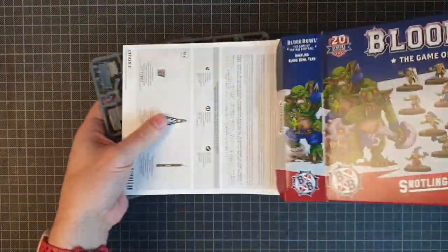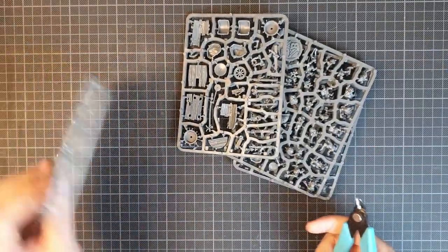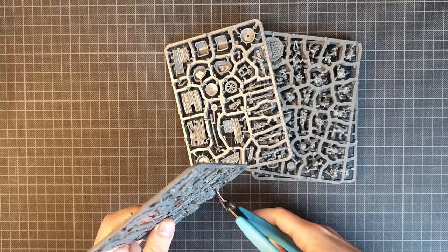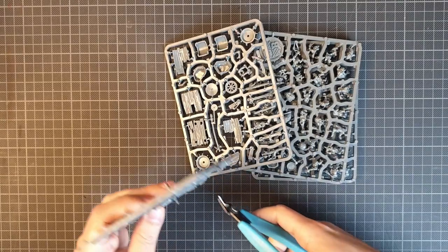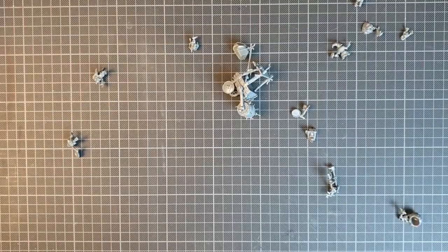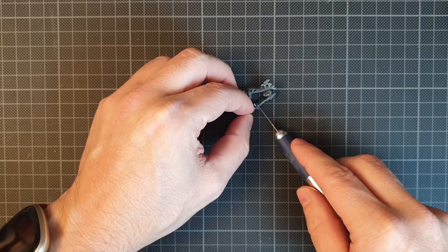The minis I'll be using in this diorama are the Snodling Blood Bowl team. Snodlings are the smaller cousins of orcs and goblins in the Warhammer universe. The box comes with two sets of ten minis, but I'll only be using half of them, so I'll avoid duplicates. I wanted to have some minis doing snow day activities, so I did some minor conversions.